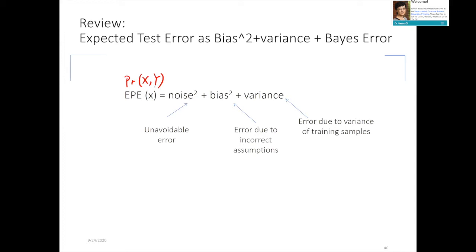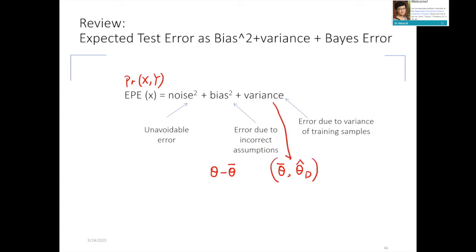Using the parameter view: you have a true model theta and an estimated model from training. The bias is the difference between the true model and the average of the model estimated from training data. The variance is the difference between theta-bar (the average from estimation) and that specific estimate from your current training data. So variance is about the spread of estimates, and bias is about the average model versus the true model.